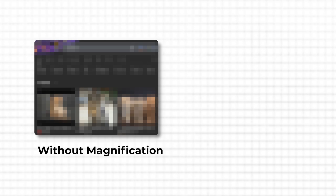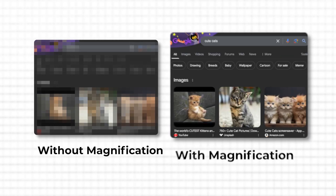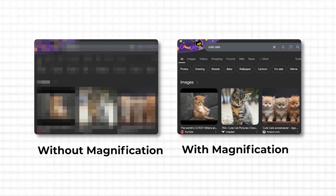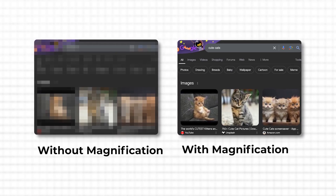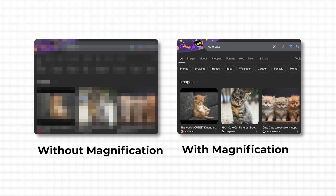I often use the magnifier when I want to screenshot something very small in high resolution on my widescreen monitor. If I had just taken the screenshot as-is, it would have been quite pixelated. But if I zoom in on the details with Windows and Plus, I can take a much better screenshot without it costing me much more time.